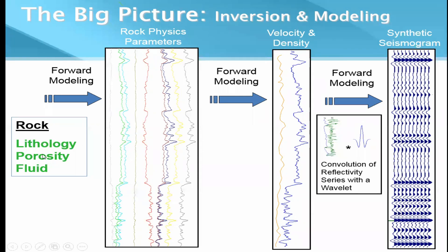In the real earth, a rock has its elastic properties and because of these we get velocity and density; the seismic source generates waves and we get the seismic response. In forward modeling on the computer, if we define lithology, porosity, and fluid, algorithms compute the rock properties — this is the first step of forward modeling. Further forward modeling gives velocity, density, acoustic impedance, reflectivity series, convolution with a wavelet, and finally the seismic trace. This is also what happens when we make a synthetic seismogram, and similarly in AVO forward modeling we can generate seismic gathers.